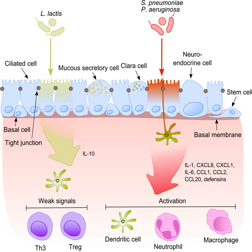It consists of a core of nine genera: Prevotella, Sphingomonas, Pseudomonas, Acinetobacter, Fusobacterium, Megasphera, Valonella, Staphylococcus, and Streptococcus. They are aerobes as well as anaerobes and aerotolerant bacteria. The microbial communities are highly variable in particular individuals and compose of about 140 distinct families.